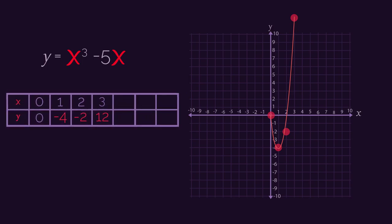So x is negative 1, x is negative 2 and x is negative 3. Substitute these 3 values into the equation. Pause the video, work out the y coordinates and click play when you're ready to check. Did you get 4, 2 and negative 12? Let's now plot these 3 coordinates onto our graph and see what shape we get.